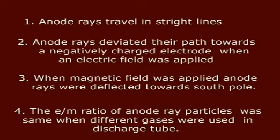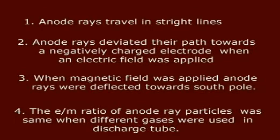3. When magnetic field was applied, anode rays were deflected towards south pole. 4. The E by M ratio of anode ray particles was same when different gases were used in discharge tube.